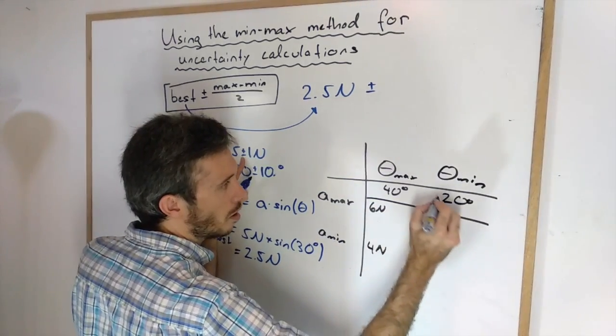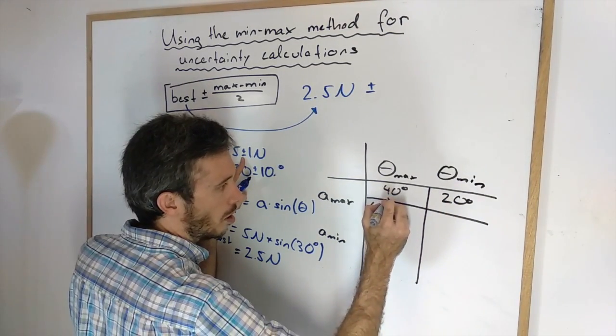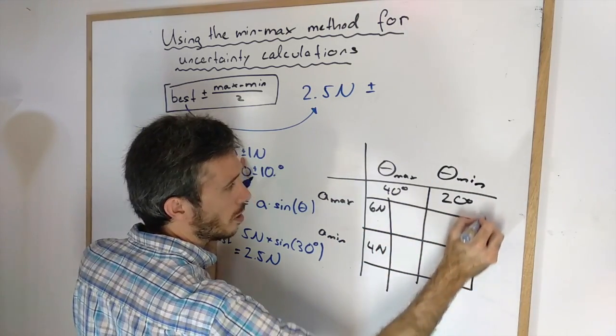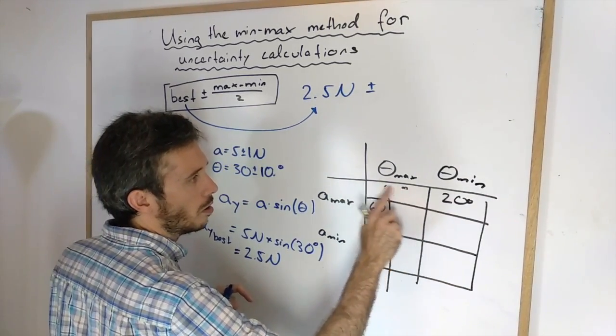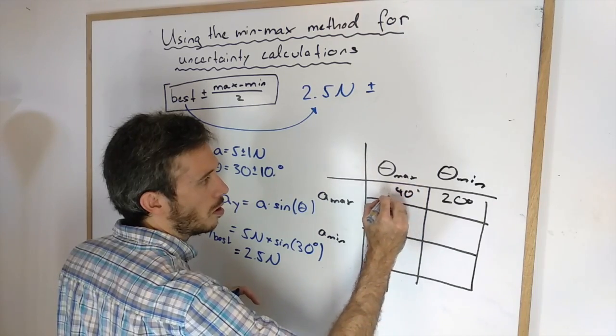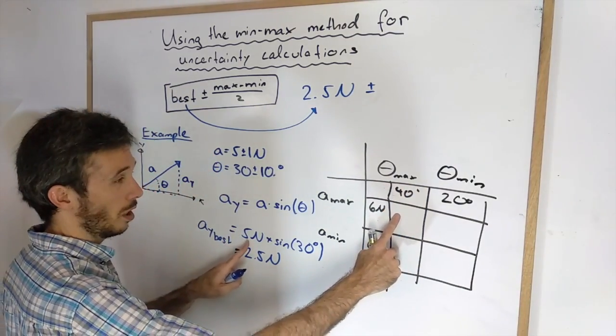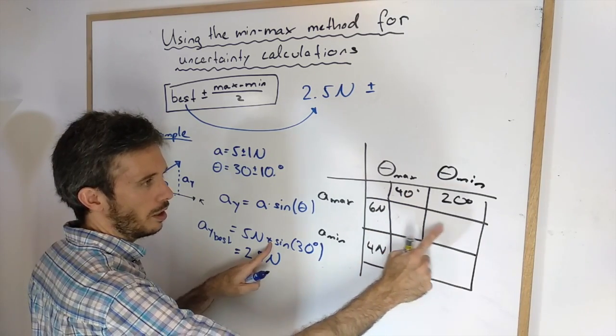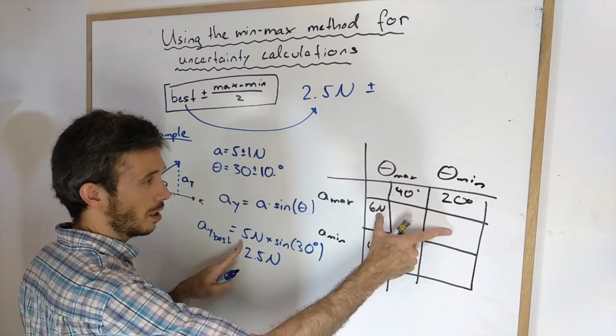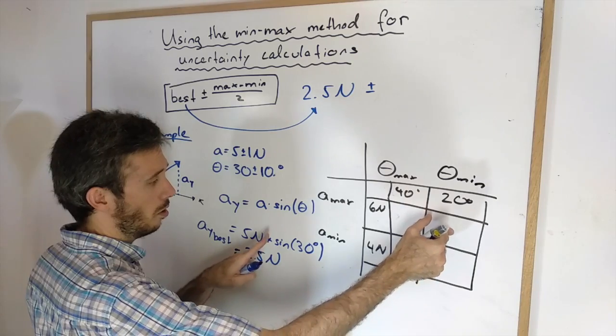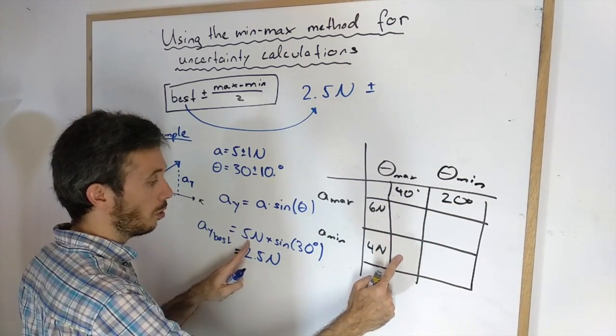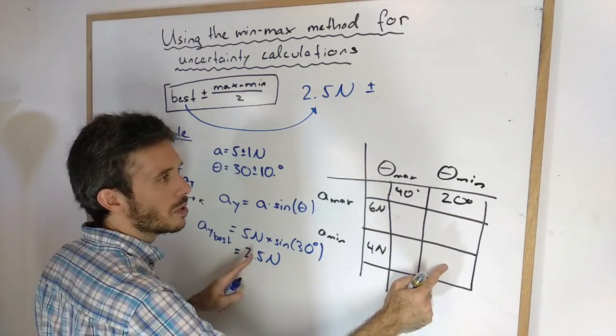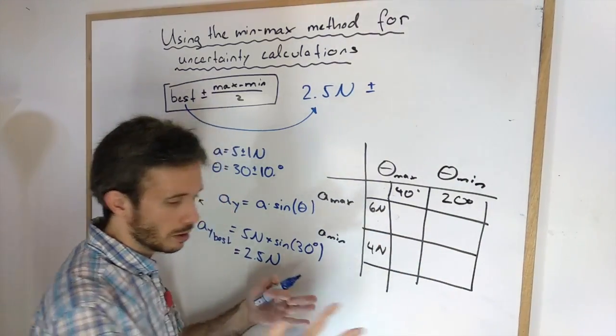And then I'm calculating all possible combinations of this. So in this field I'm doing 6 newtons times sine of 40. In this field I'm doing 6 newtons times sine of 20. Here I will do 4 newtons times sine of 40 and here I will do 4 newtons times sine of 20. So let's calculate this.